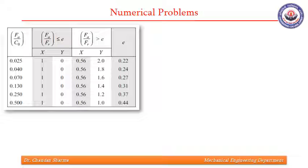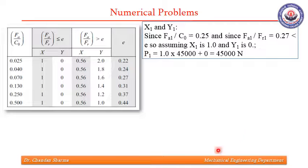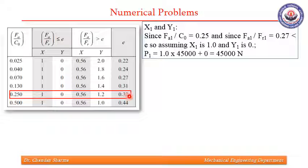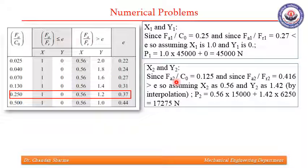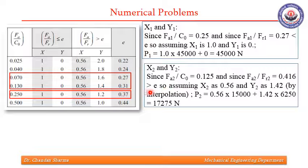We use the same table to find values of X and Y. For X1 and Y1: Fa1 by C0 is 0.25, so a specific set of values applies. Since Fa by Fr1 is less than E, our X1 is 1 and Y1 is 0. For X2 and Y2: Fa2 by C0 is 0.125, which is within the applicable range. Since Fa2 by Fr2 is 0.416, which is more than the value of E for that Fa by C0, the other set of values applies.